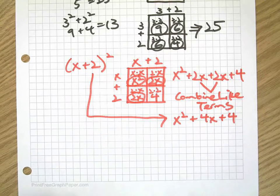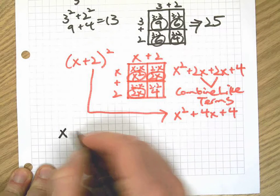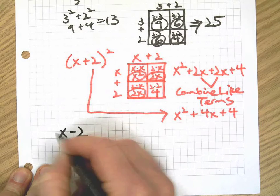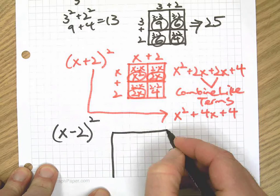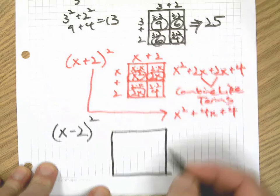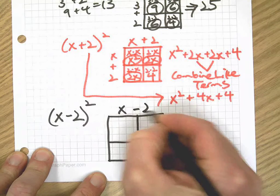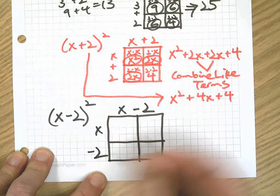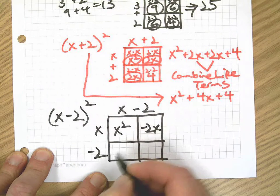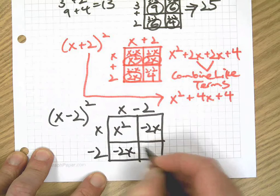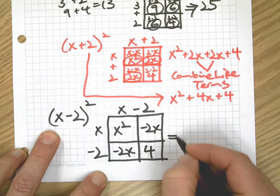And that is how you use a rectangle model to square a binomial. Let's do one more just for fun. I think the bell is going to ring here, but what the heck, let's do it anyway. Let's do x minus 2 squared. Let's see what happens. I'm going to make it bigger this time. x minus 2, x minus 2. We have x squared, we have negative 2x, negative 2x, and positive 4.